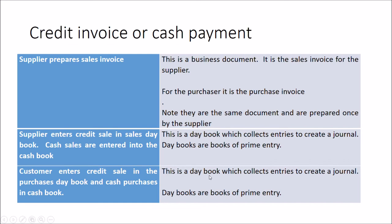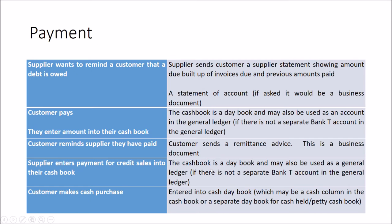Now we move to a position where amounts are owed and awaiting payment. For credit payments, the supplier wants to be paid and may provide a supplier statement showing amounts due and amounts previously paid. This is a statement of account — classified as a business document — from the supplier's perspective, showing what's owed. From the customer's perspective, it's a credit — showing what they owe.